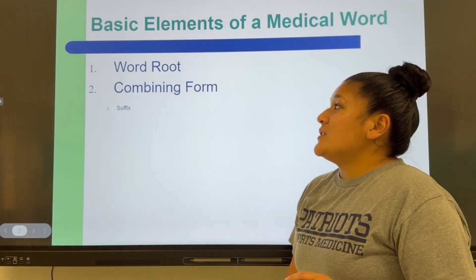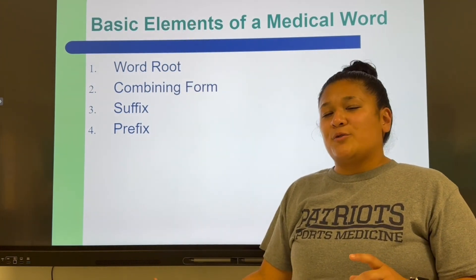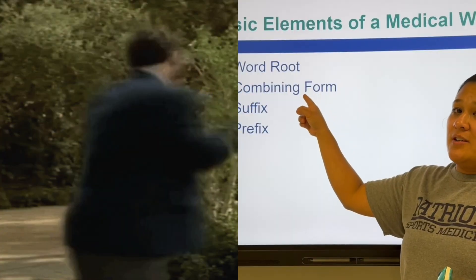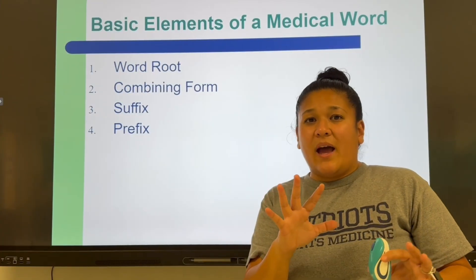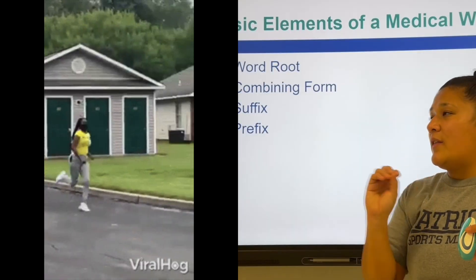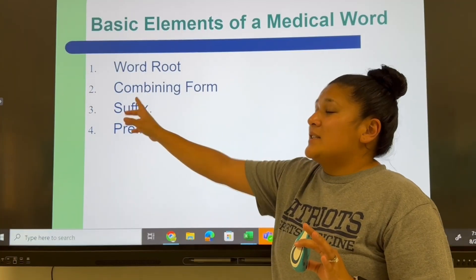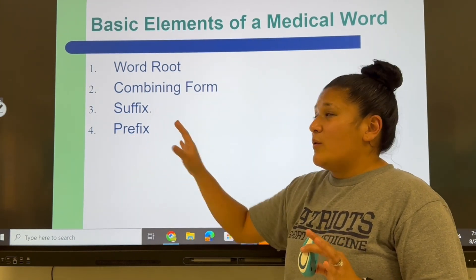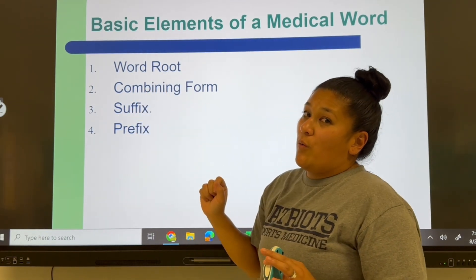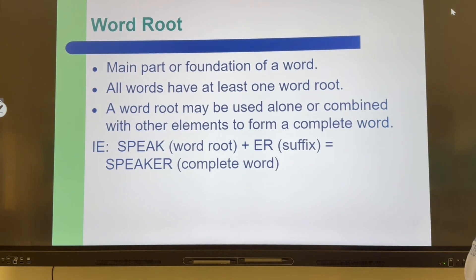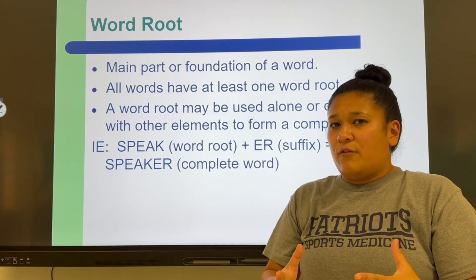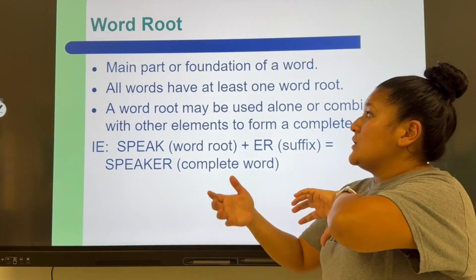Just like in English, medical terminology has four basic elements: the word root, the combining form, the suffix, and the prefix. The combining form changes, which is what trips people up — I have this packet designed to give us a lot of practice, so don't let that combining form trip you up. The suffix is found at the end of the word and alters the word root. The word root is typically the foundation of the word, relating to a body part or organ — it's how we figure out what we are referring to.